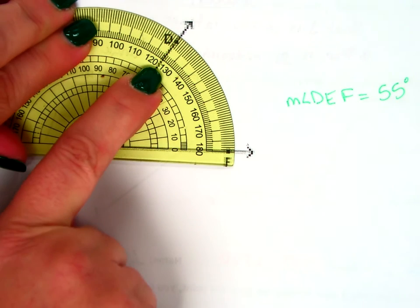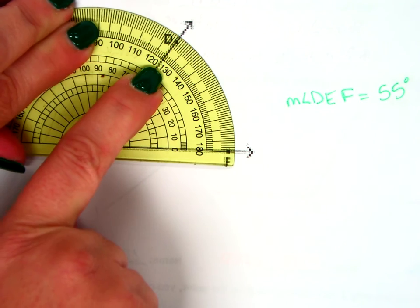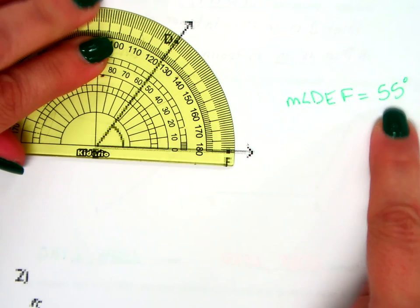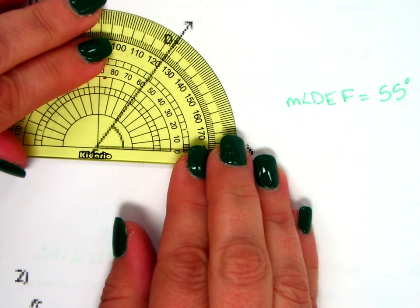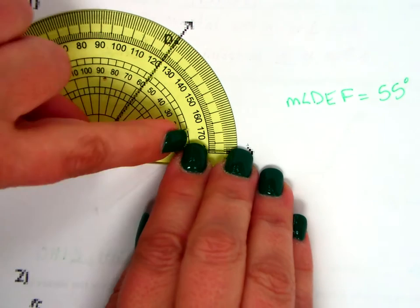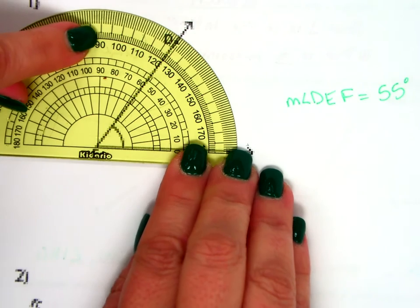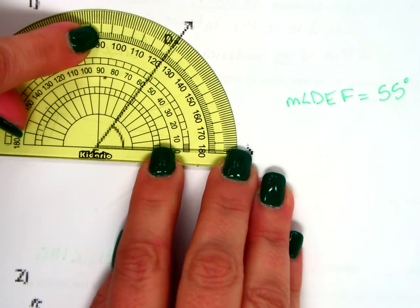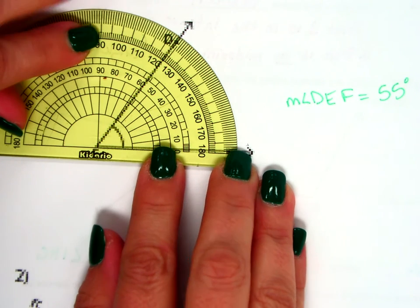And then if I keep going, I fall between the 120 and the 130. So 125. But how did I know it was the small one? We could think kind of logically and say, well, this angle doesn't open even all the way up to 90. So it's got to be acute. So it's got to be the smaller of the two numbers.